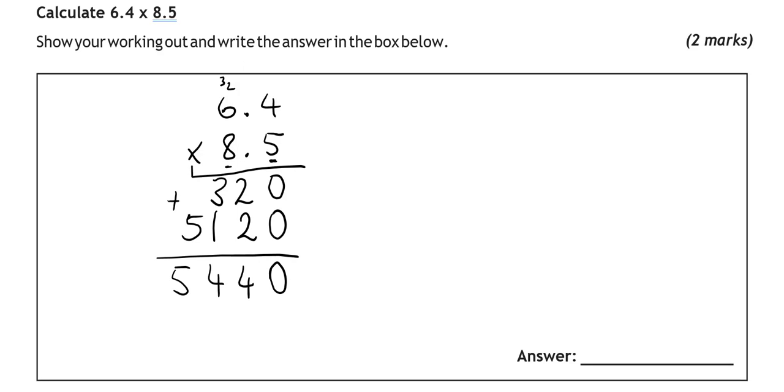Now this is the point where I put the decimal point in. So looking at the first number, we've got one decimal place, which means one digit after the decimal point. And same thing with the number underneath. So we've got one decimal place. So both of them together, it's two decimal places. So I'm going to start from the end. 1, 2. So the decimal point should go here. So the answer is 54.40 or 54.4.